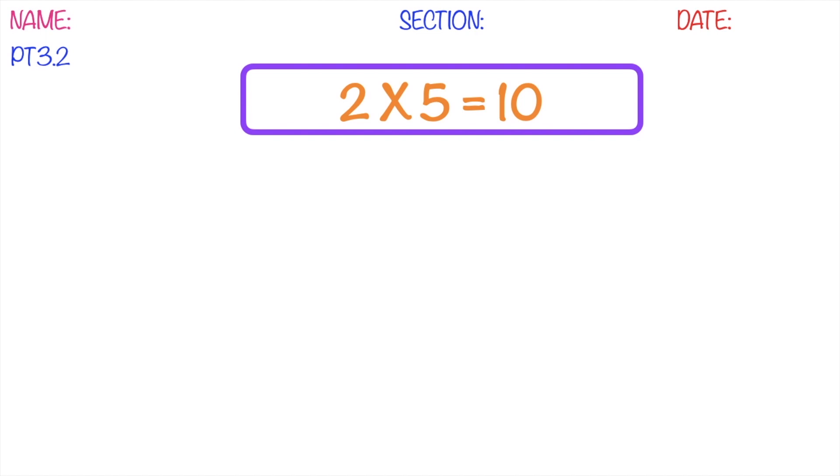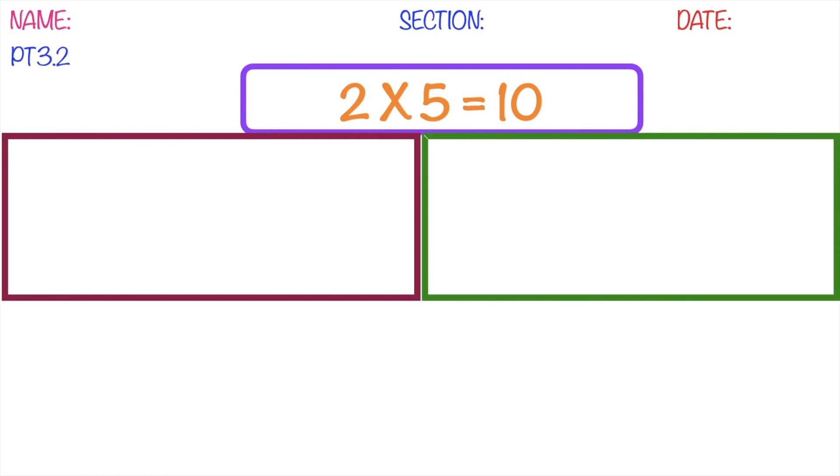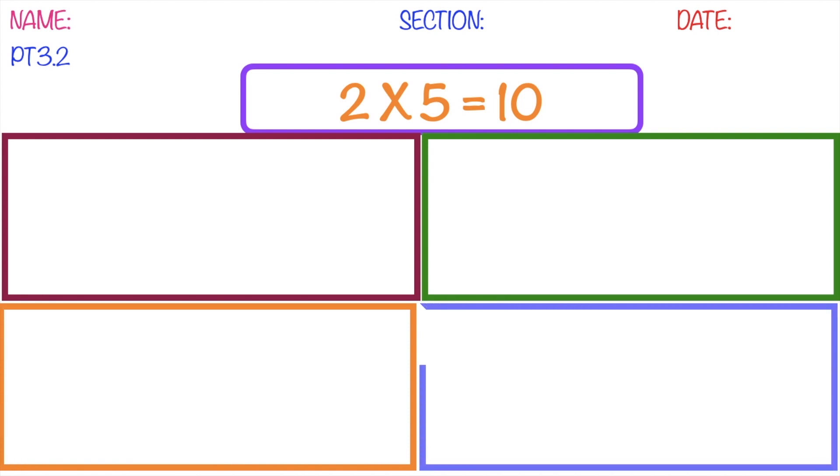Then after that, draw four boxes just like this. Then on the first box, you're going to illustrate the multiplication sentence that you created using set of objects. Since our multiplication sentence is 2 times 5 equals 10, so it is two groups of 5s.